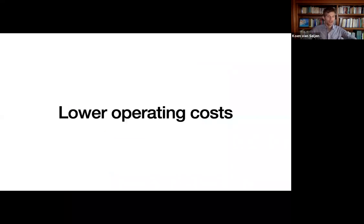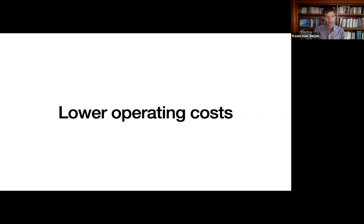Point two: lower operating costs. Because you're less reliant on external inputs, you can have lower operating costs. Many operations do need more hands on the farm, and there are other costs, but many are no longer buying expensive chemical inputs. Remember, farming is a margin business — profitable farmers look at their input costs and output margins, not just yield.